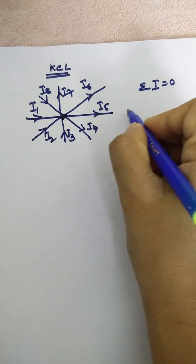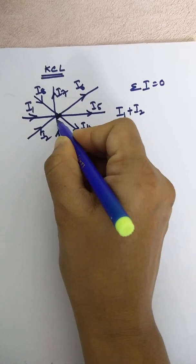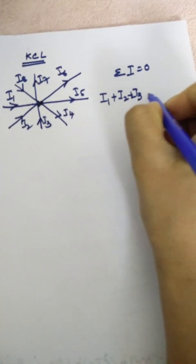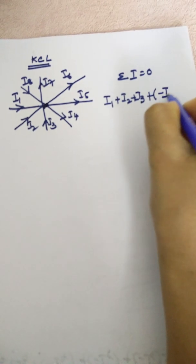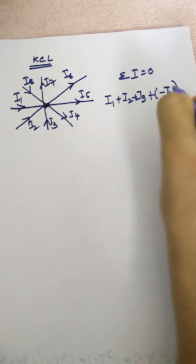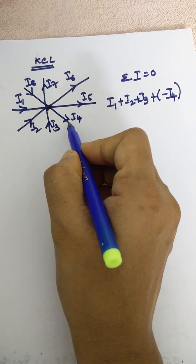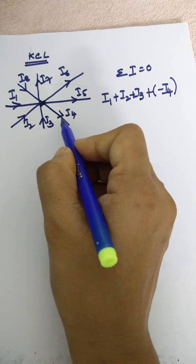So this is I1 plus I2 because this is also entering, plus I3. Next, plus of minus I4. Because this is a leaving current, for leaving currents we assume the current as negative. So that is why plus of minus I4.